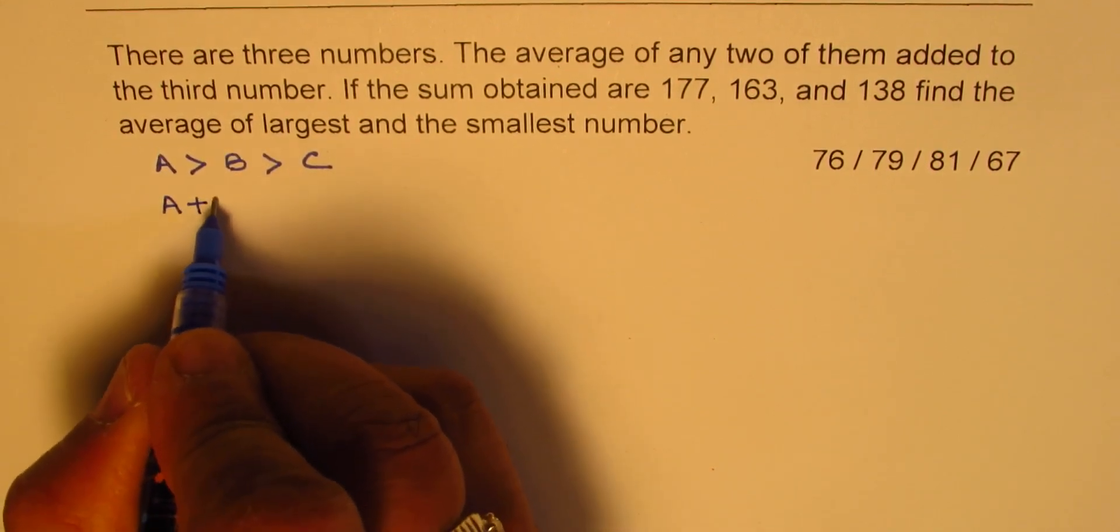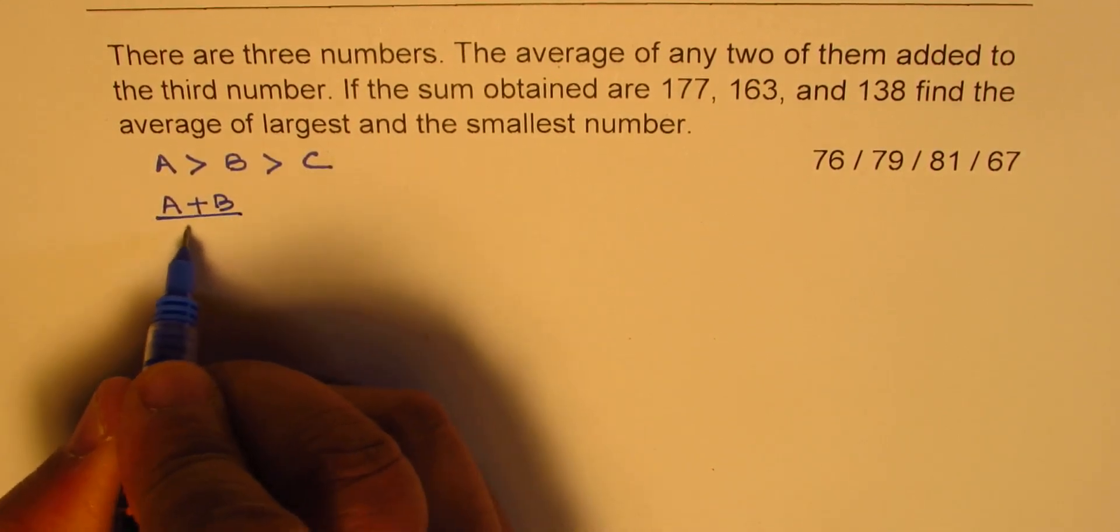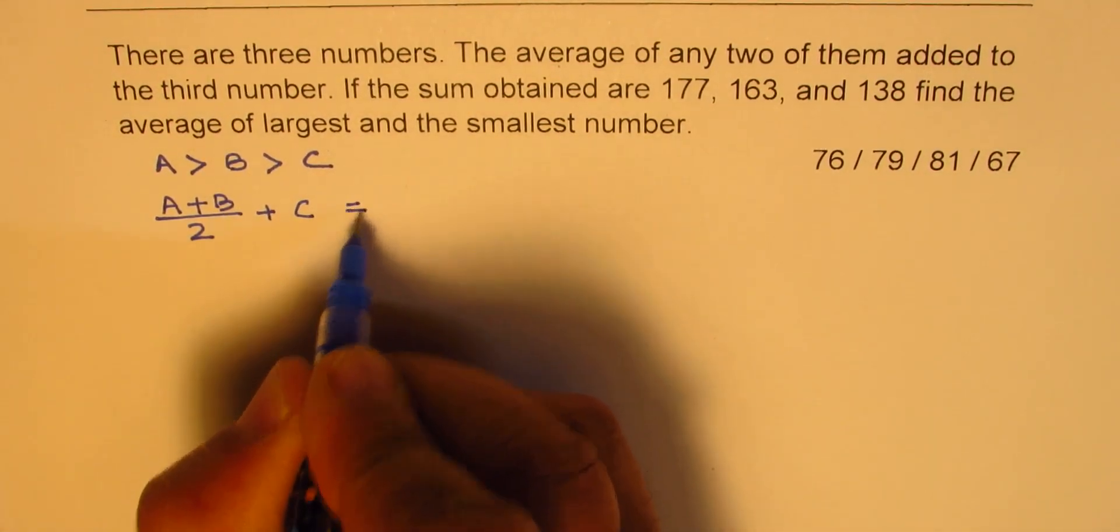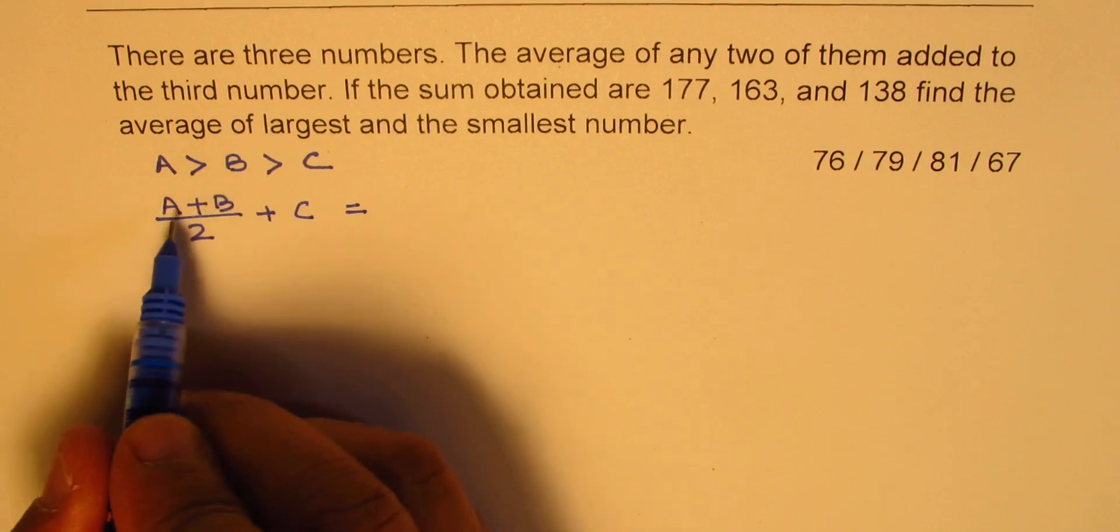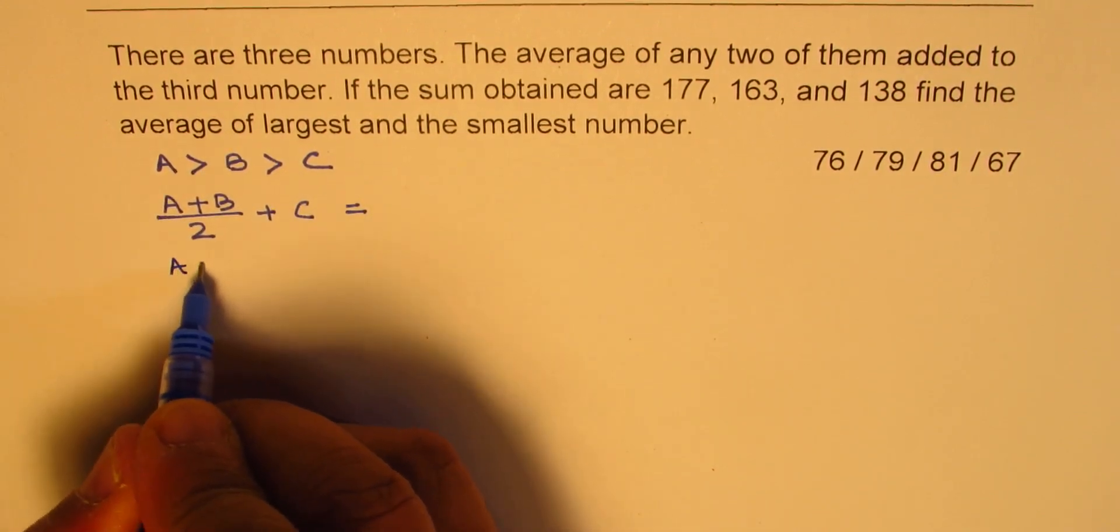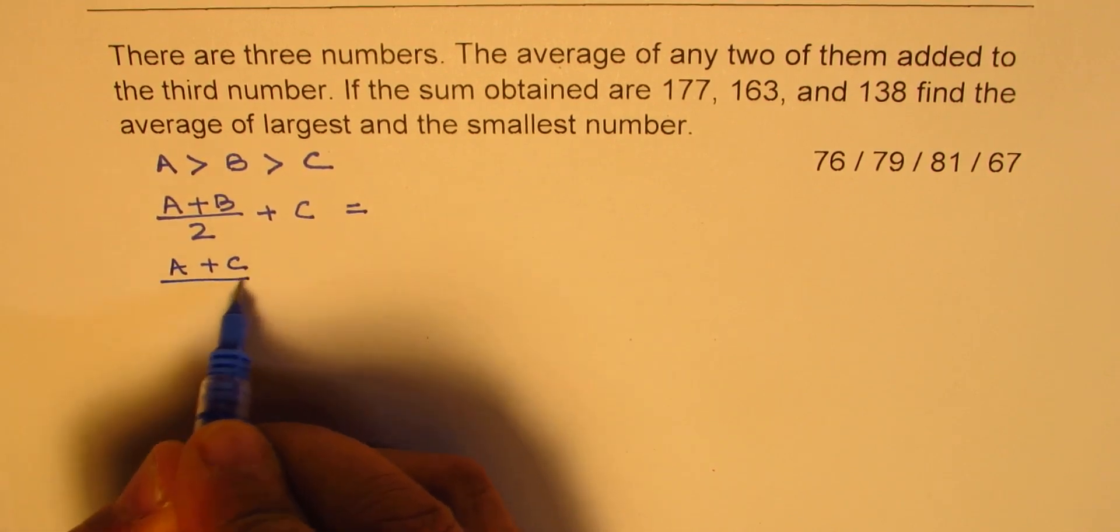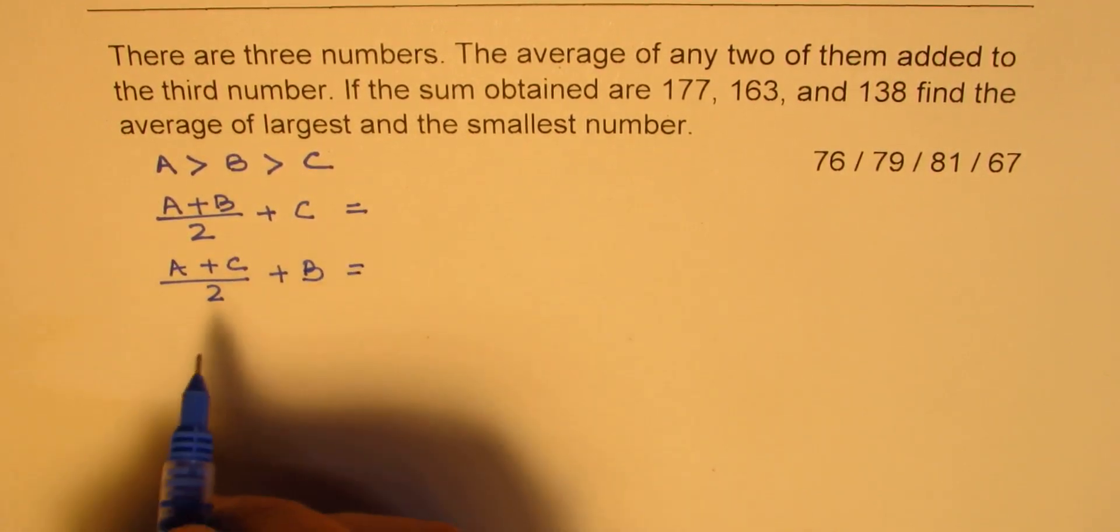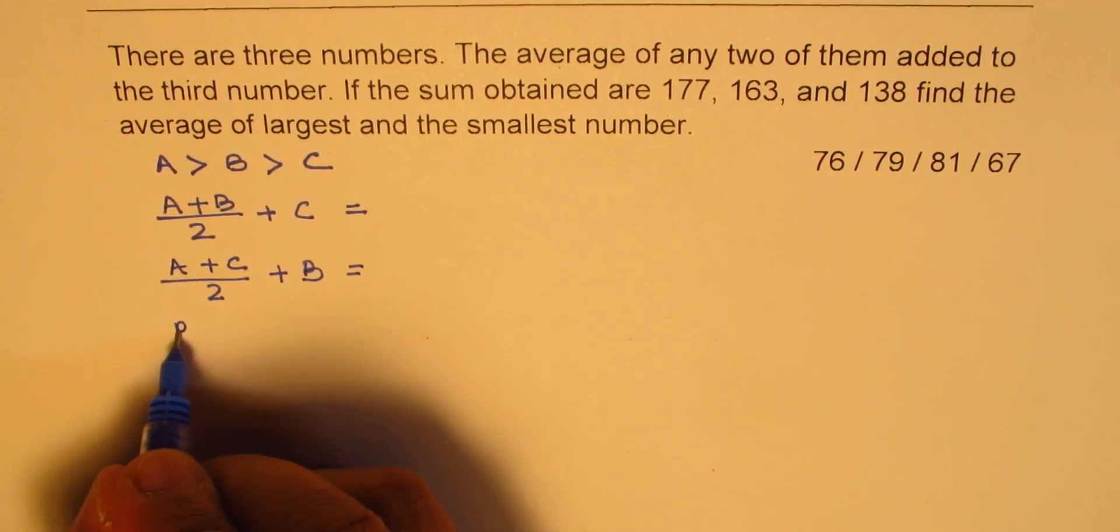So any two of them - let's have these averages. A plus B, so that is average of any two of them added to the third, so that sum is given to us. So we can say (A+B)/2 + C is given to us, (A+C)/2 + B is given to us, and we are also given (B+C)/2 + A.